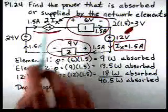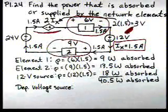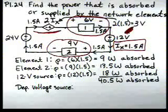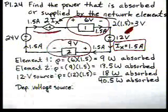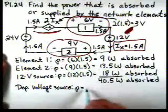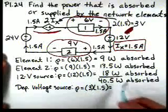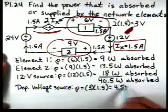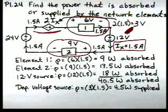For the dependent source, notice that the current is entering the minus terminal and leaving the positive terminal. That's opposite to our passive sign convention, so this element must be supplying power. Taking the product of V and I gives us 3 times 1.5, which is 4.5 watts supplied. So the dependent voltage source is supplying 4.5 watts.